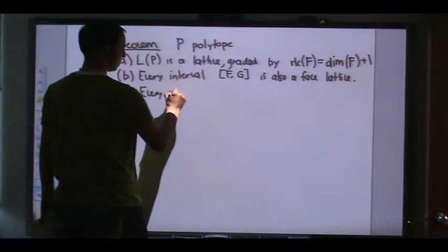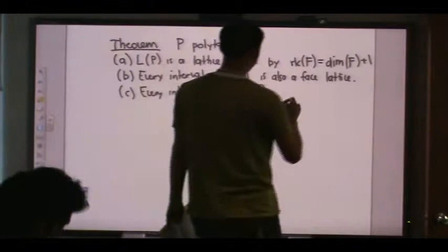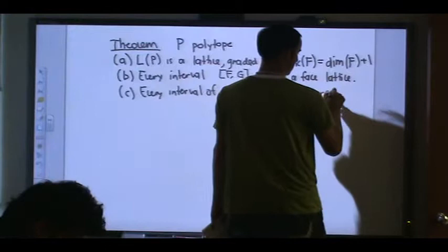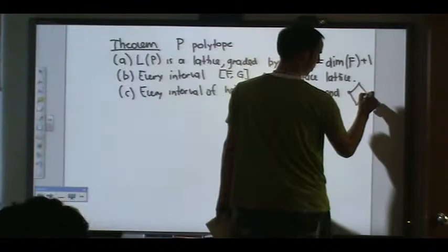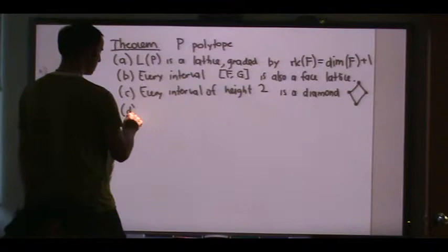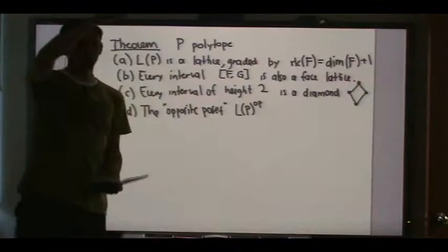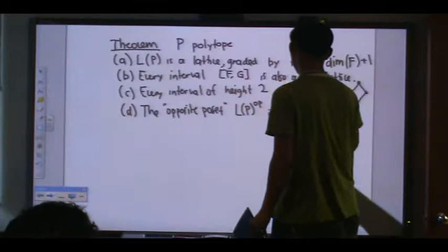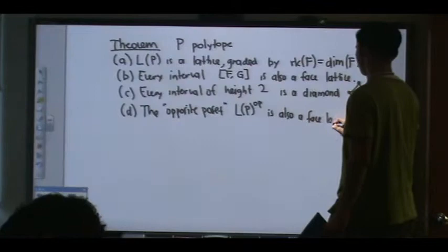Next: every interval of height 2 — meaning length 2, having 3 levels — is a diamond. A diamond is just the poset with a bottom, two middle elements, and a top. You saw this in the previous example. And lastly, the opposite poset L(P)^op — where you turn the poset upside down — is also a face poset.